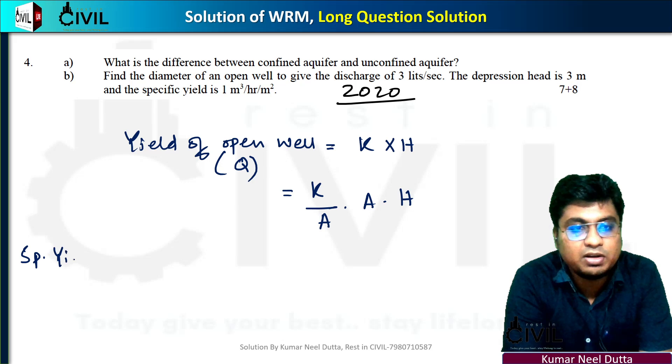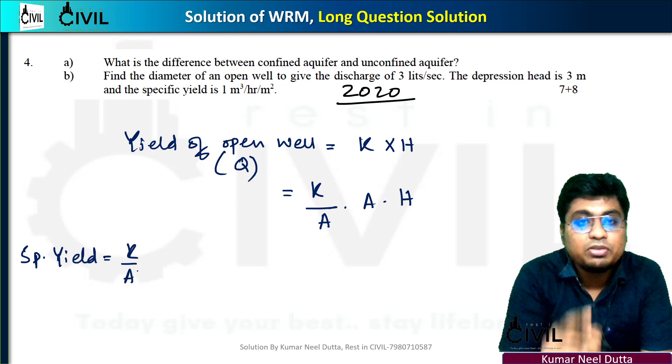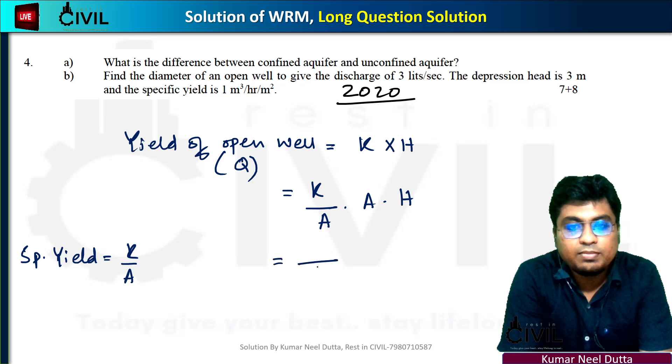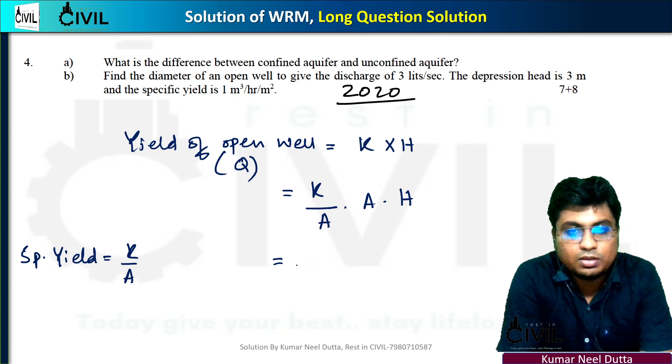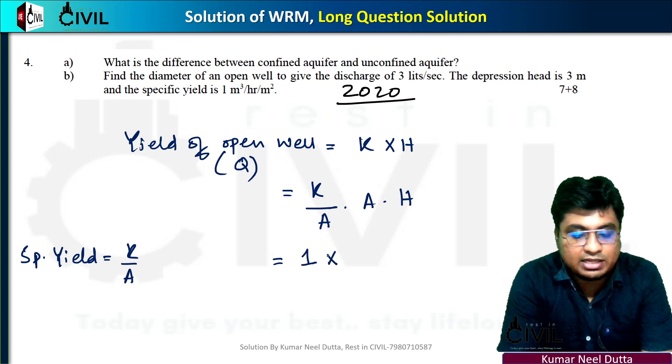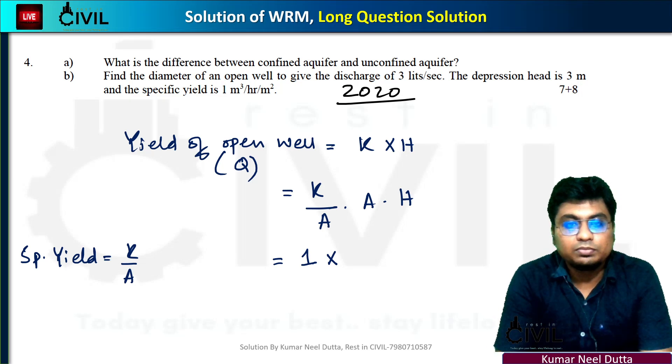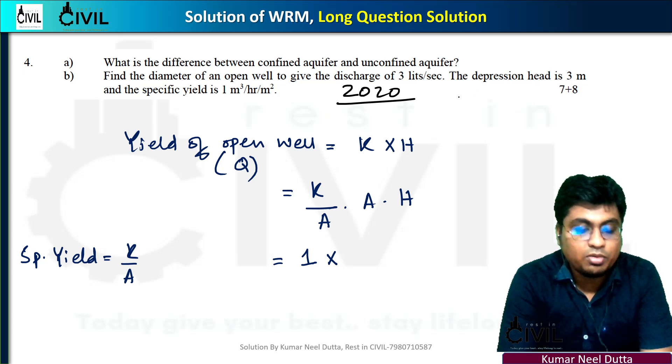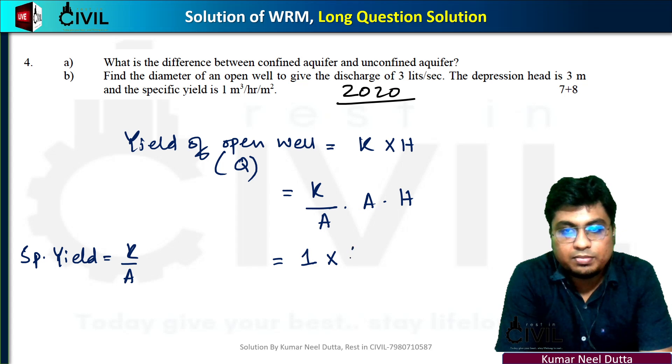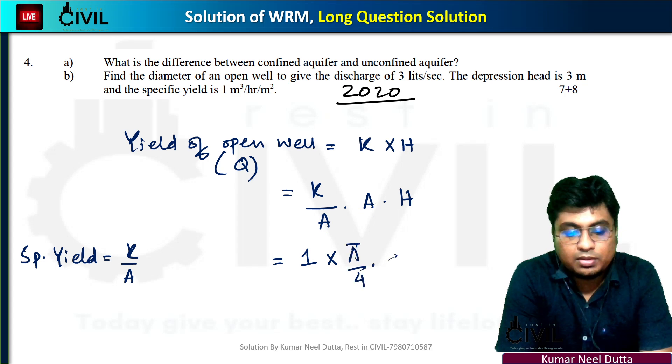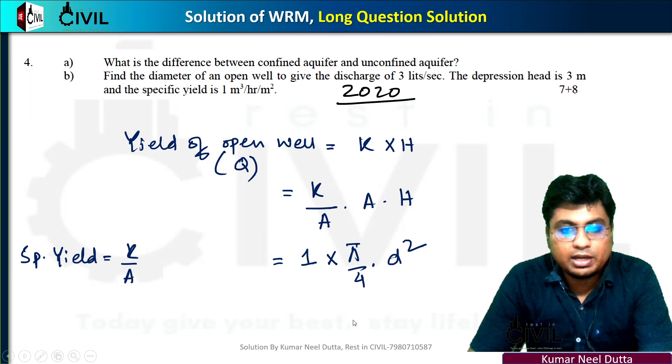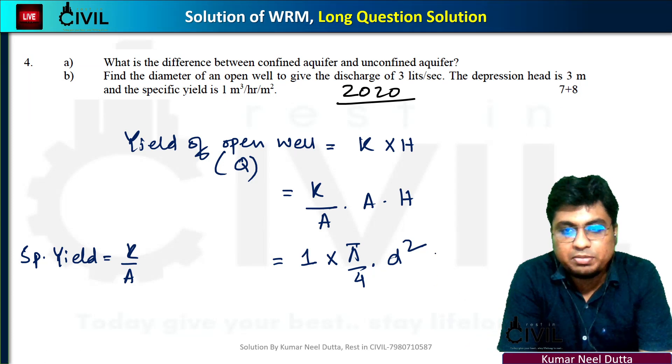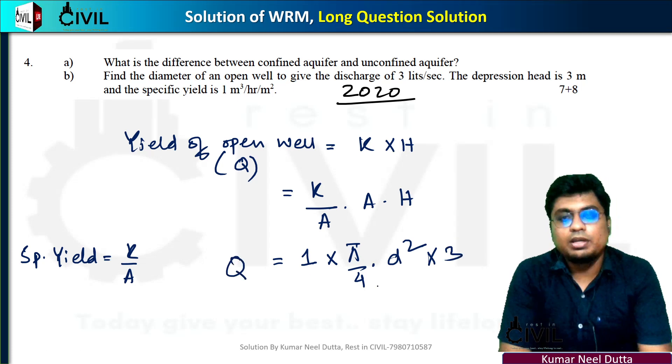The yield of open well is equal to specific capacity times area, where area equals π/4 times d squared.